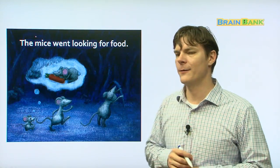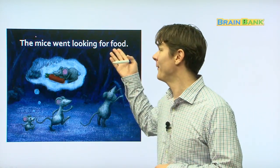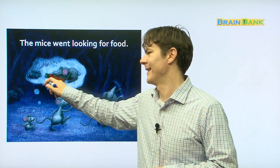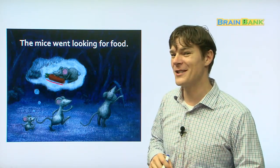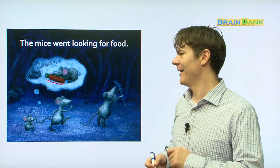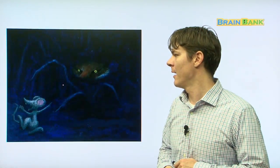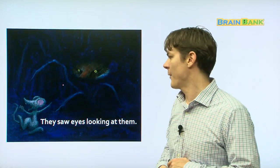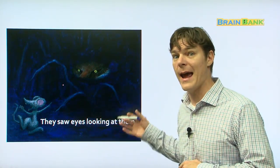The mice went looking for food. Everyone repeat. The mice went looking for food. What kind of food are they looking for? A carrot. A nice juicy orange carrot. So delicious. And there they are. Walking around happy, thinking about the carrot. But then, they saw eyes looking at them. Everyone repeat. They saw eyes looking at them.